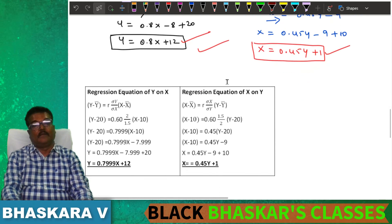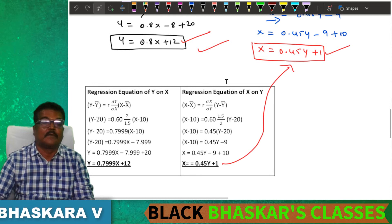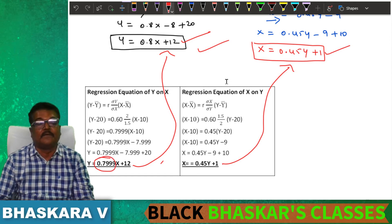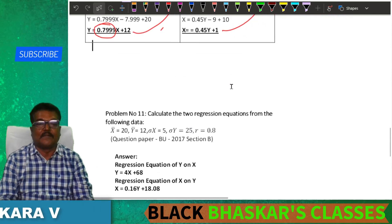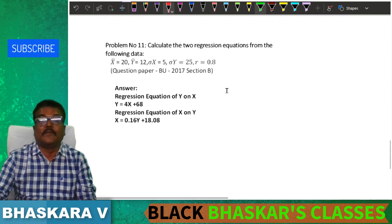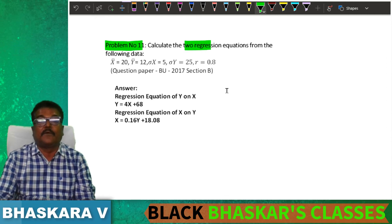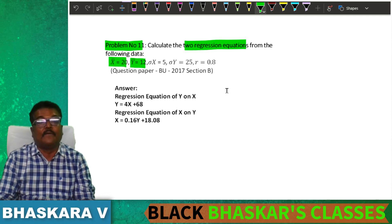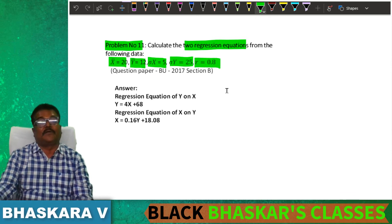The solution is the same — approximately 0.7999, which is equal to 0.8. Problem number 11: calculate the two regression equations. Given x bar, y bar, standard deviation of x, standard deviation of y, and correlation.